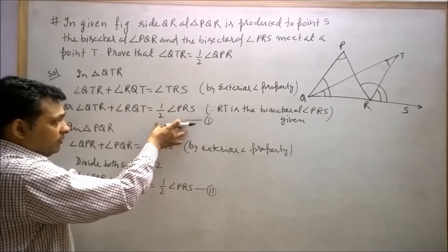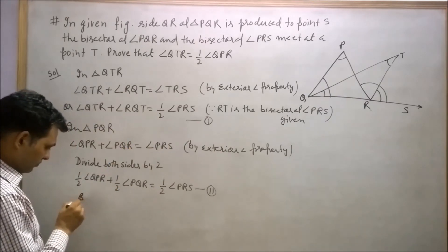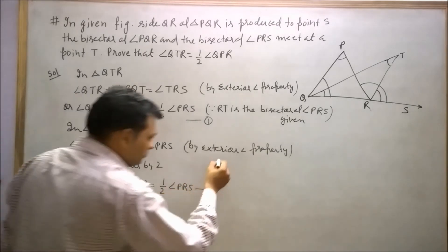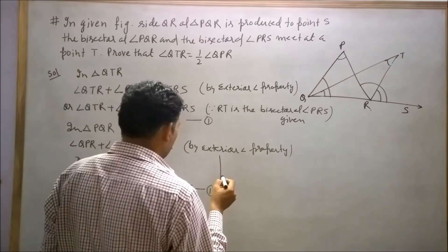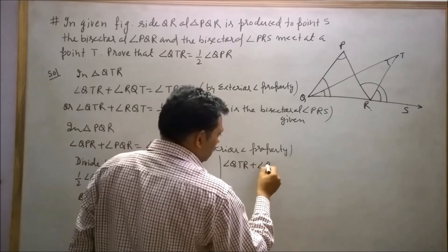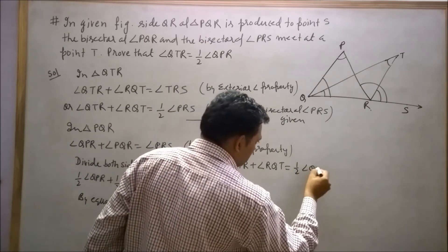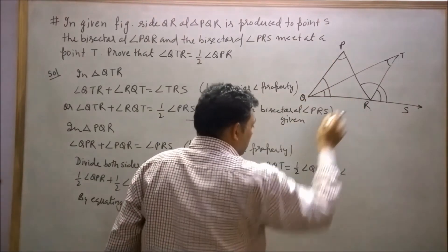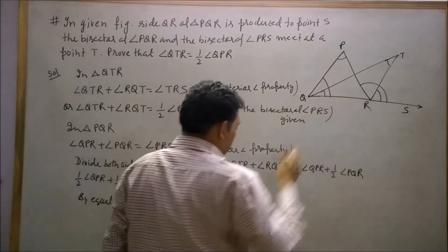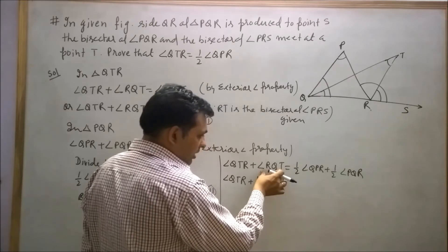Half of angle QPR plus half of angle PQR is equal to half of angle PRS. This is our second equation. This is the first part in which half of PRS equals this, and half of PRS also equals this. By equating equation one and two, angle RQT equals half of angle QPR plus half of angle PQR.